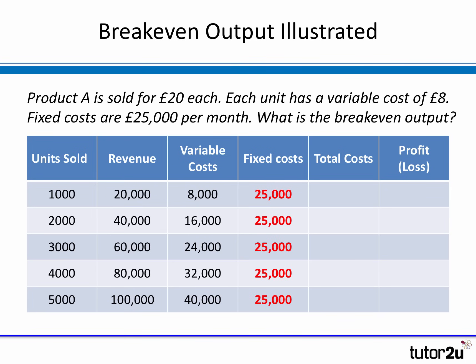Fixed costs do not vary with output, so despite the increase in units sold, fixed costs remain at £25,000 at whatever level of output. To calculate total costs we add variable costs plus fixed costs. For example, when we sell 1,000 units our total cost is £33,000, which comprises £25,000 of fixed costs plus £8,000 of variable costs. To calculate a profit or loss we take total revenue less total costs.